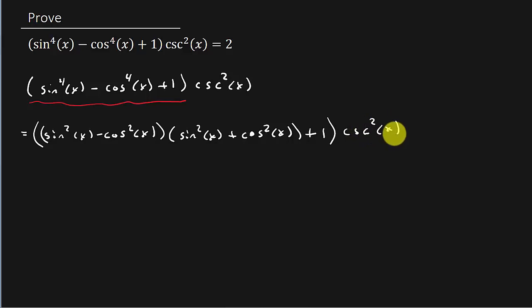And so that is going to be sine squared minus cosine squared plus one times cosecant squared x. All right, so we need to see if we can somehow get to 2.